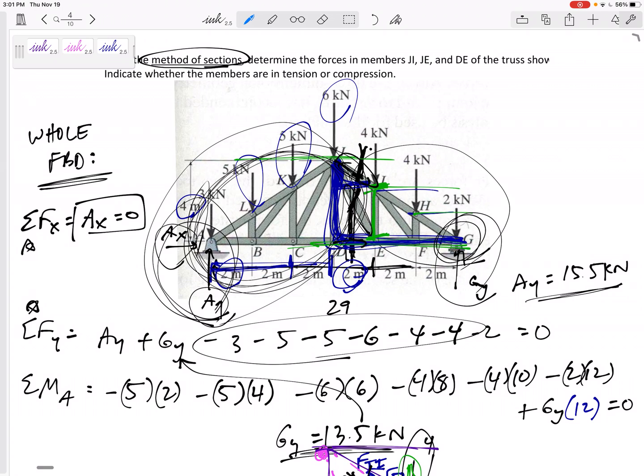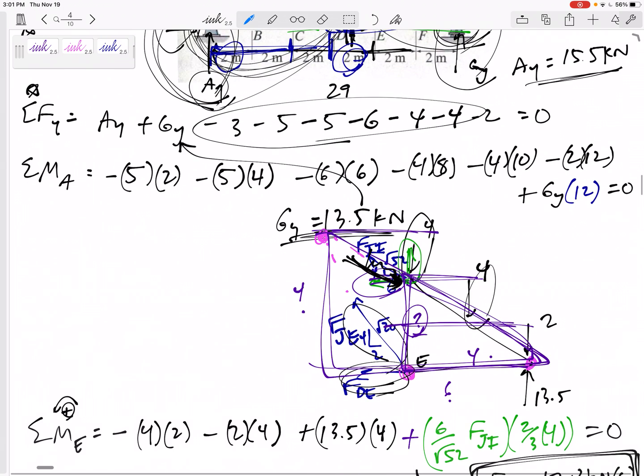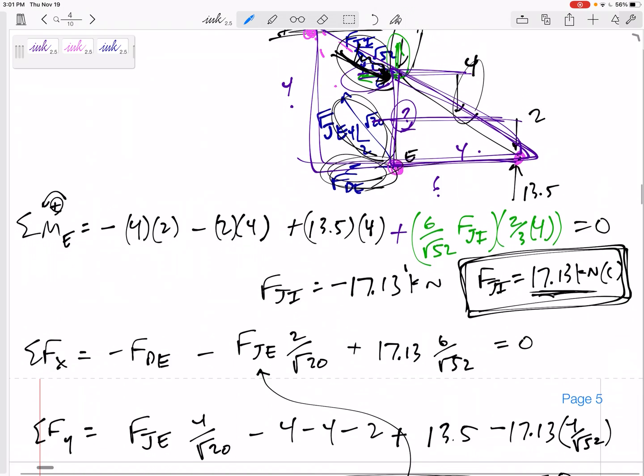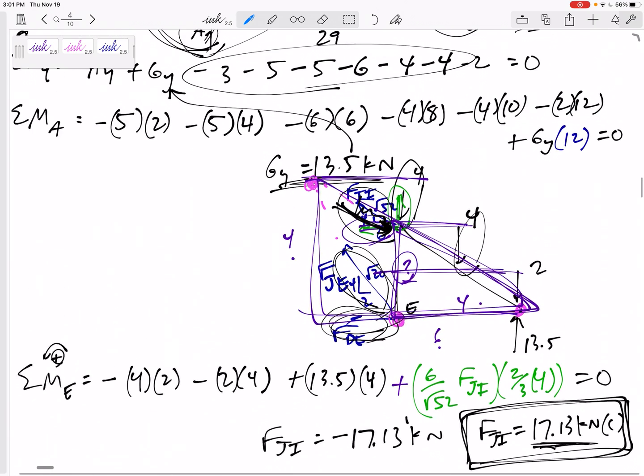In the method of sections, you cut it, you draw, you expose the members that you're cut through, and I like to guess tension. I like to guess them pulling. And then I can sum the forces in X, sum the forces in Y, and sum the moments about any point for that section.